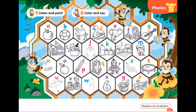M. Mouth. N. Nut. O. Orange. P. Pencil. Q. Queen. R. Robot. S. Snake. T. Trampoline. U. Umbrella. V. Vet. W. Water. X. Six. Y. Yogurt. Z. Zoo.